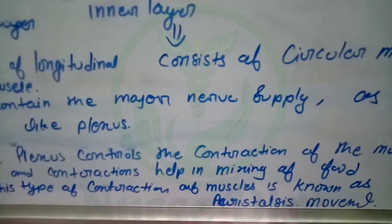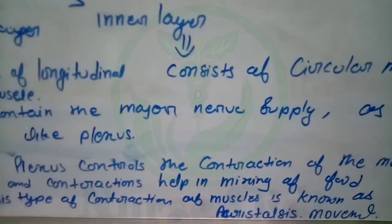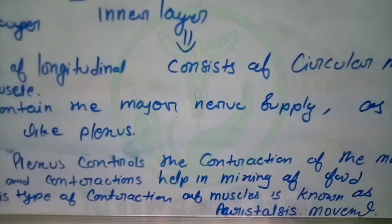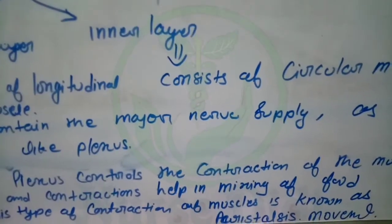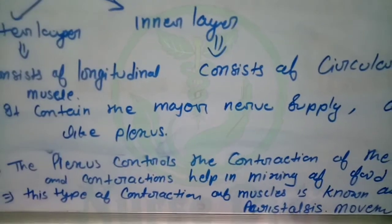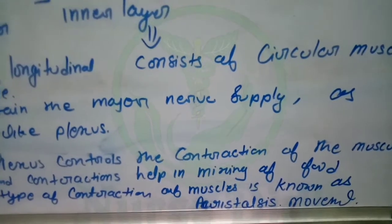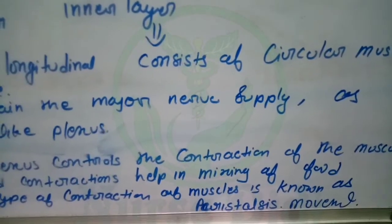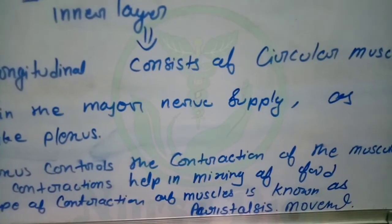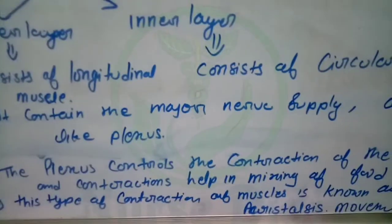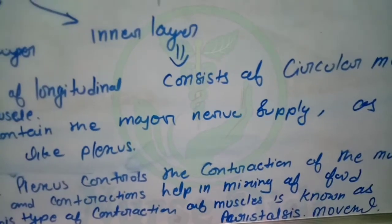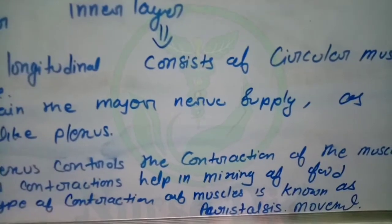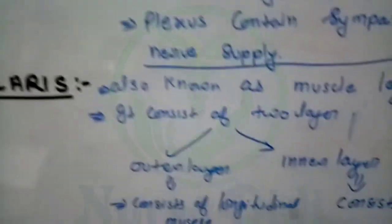The contraction of the muscles helps mix food with saliva. The digestive juices and secretions are mixed through muscle contractions, and this type of contraction of muscles is known as peristalsis movement. This is a very important point - sometimes in exams or general knowledge they ask: what is the peristalsis movement in the GIT tract? The contractions in the digestive system mix food with saliva for digestion.